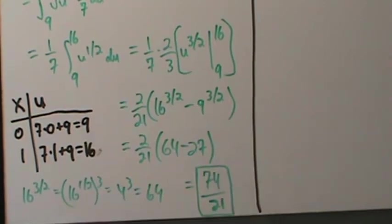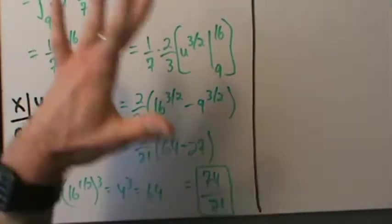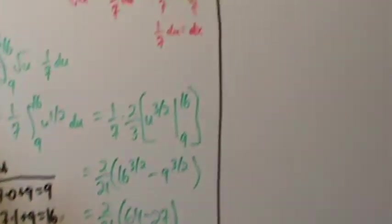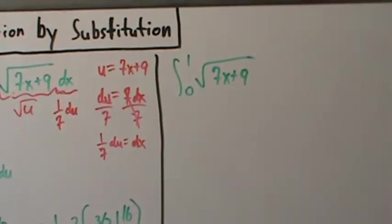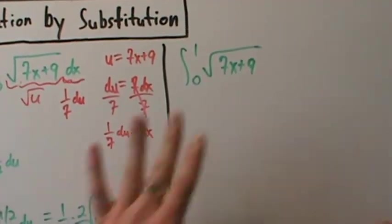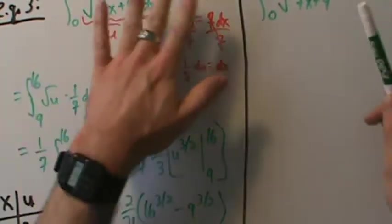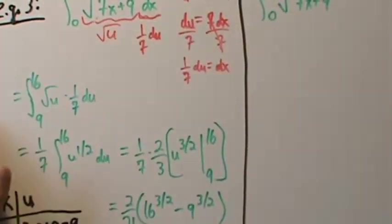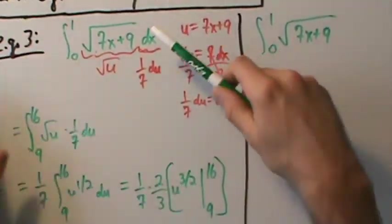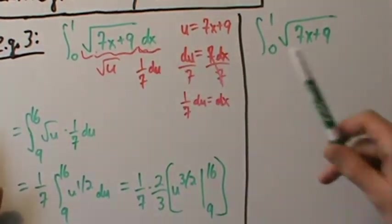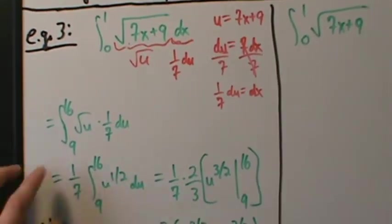How we get there will be a little different, but the substitution is the same — u = 7x + 9, du = 7 dx, so (1/7) du = dx — all of that is the same.